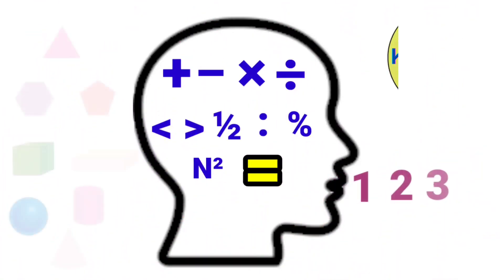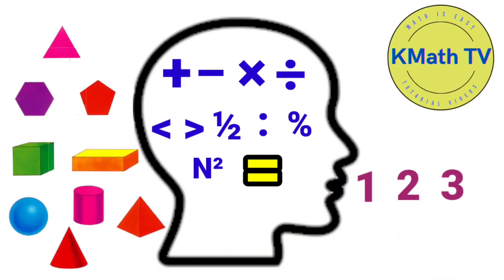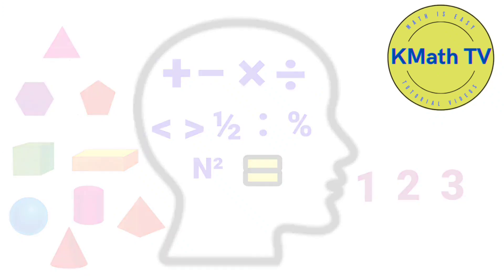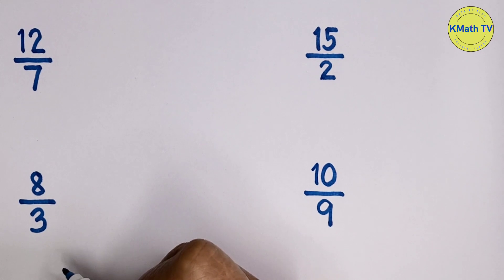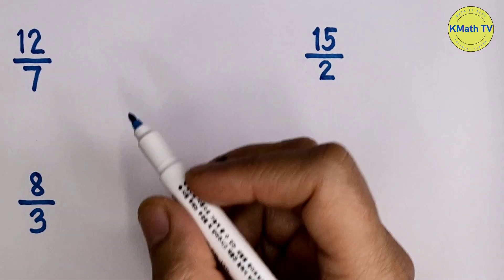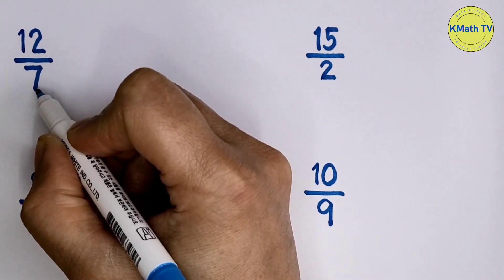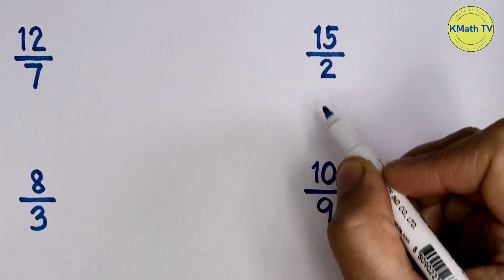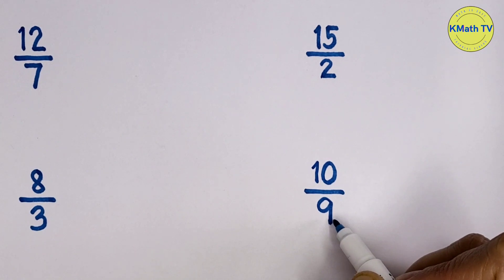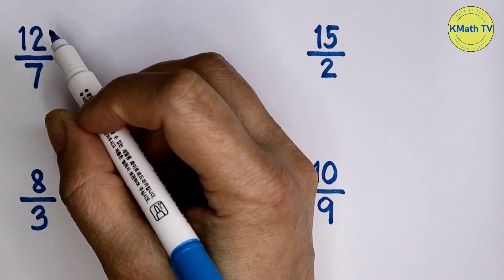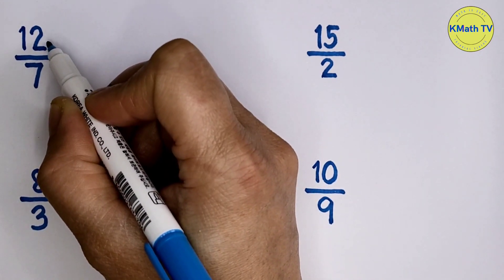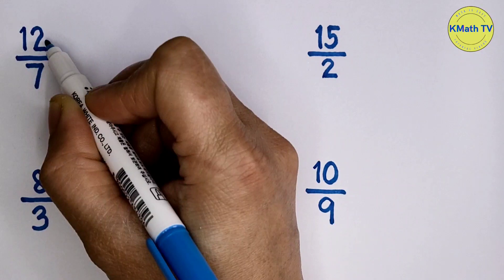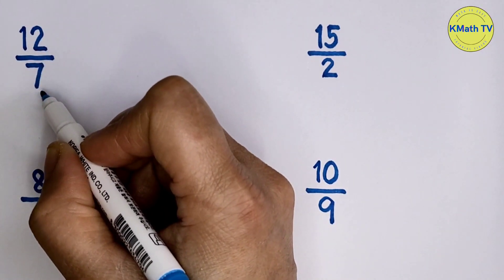Hi! Welcome to KMath TV. In this video, I'll show you how to change improper fractions to mixed numbers. An improper fraction is a fraction with a numerator greater than the denominator. We will change these improper fractions to mixed numbers. To change an improper fraction to a mixed fraction, divide the numerator by the denominator.